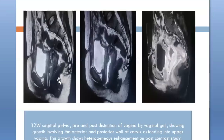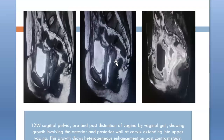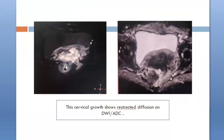This is a new case. This is the T2-weighted image pre-distension of the vagina by vaginal gel, which showed a T2 hyperintense lesion in the posterior wall of the cervix extending and involving the upper two-thirds of the vagina. The second image is obtained after distension of the vagina by vaginal gel, where we can appreciate the T2 hyperintense lesion in the posterior wall of the cervix extending and involving the upper vagina. This lesion showed heterogeneous enhancement on post-contrast study. Restriction of diffusion was seen on diffusion-weighted images.